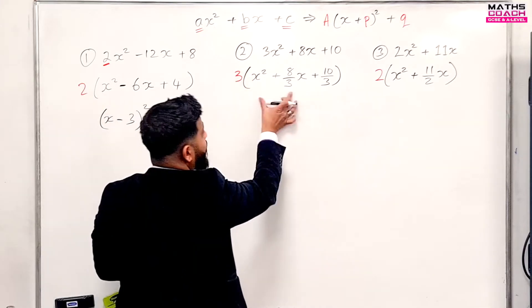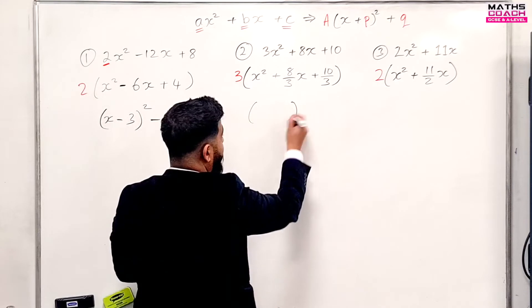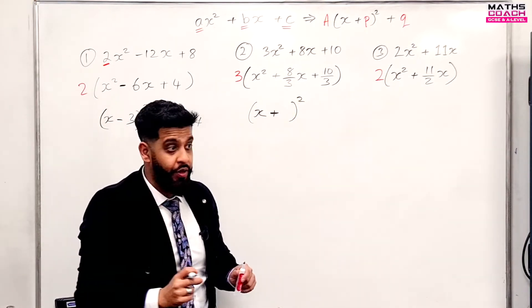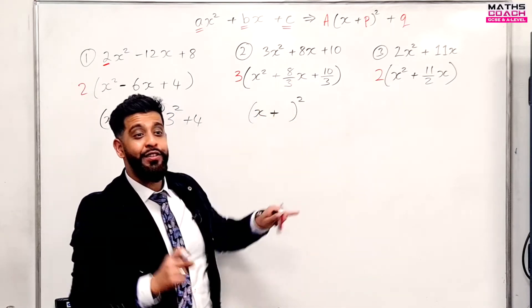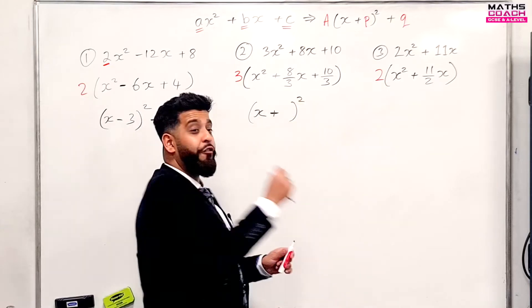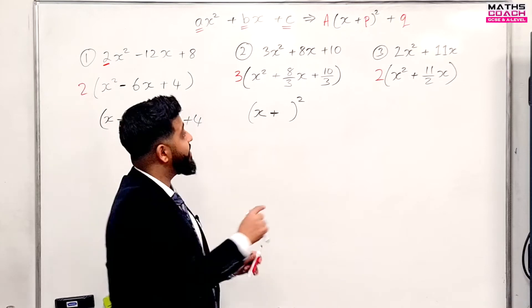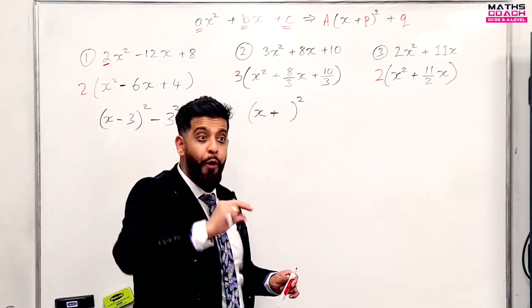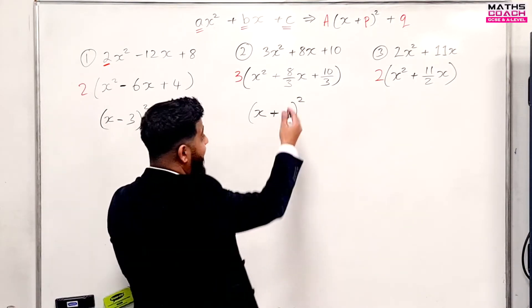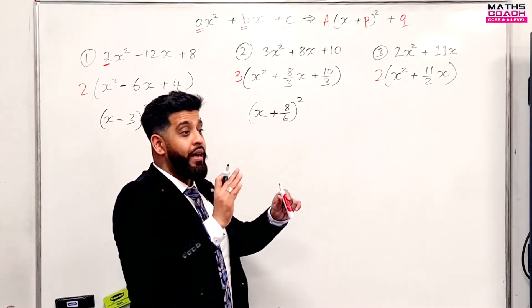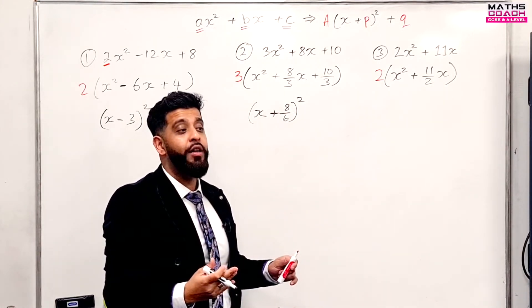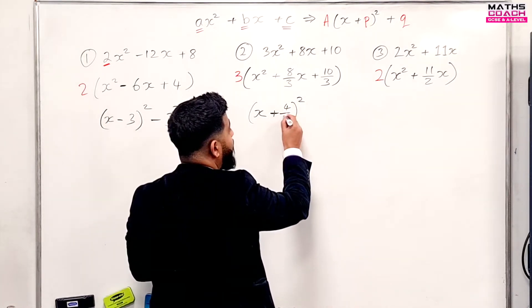Let's do the same thing over here. Once again, ignore the 3 — just look at this. This one is going to be a little bit trickier. We have an empty bracket, we do x, and the sign is plus. Now we have a fraction — we want to divide 8 over 3 by 2. When you divide a fraction by 2, it's simply multiplying the denominator by 2. So what is 3 times 2? 6. So you're going to have 8 over 6. And if it simplifies, you simplify it — can you simplify 8 over 6? Yes, divide both by 2 to get 4 over 3.